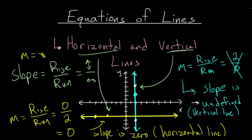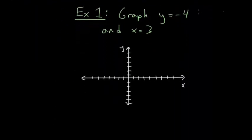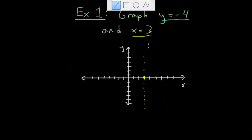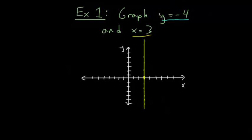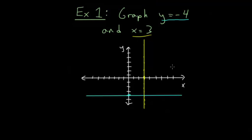Let's go through some example problems. For the first one, we want to graph two equations: y equals negative four, which I'll graph in blue, and x equals three, which I'll graph in yellow. Starting with x equals three — we find the x value of three, and all points on this line have the same x value of three. This gives us a vertical line at x equals three. For y equals negative four, we find the y value of negative four, and all points on this horizontal line share that same y value.